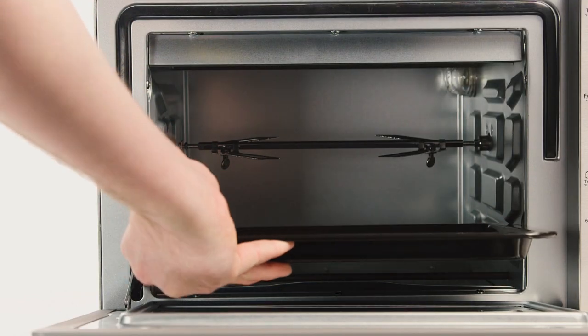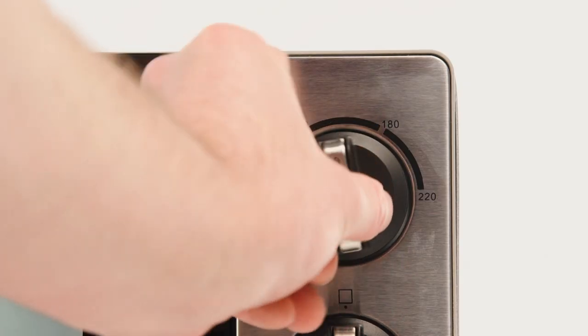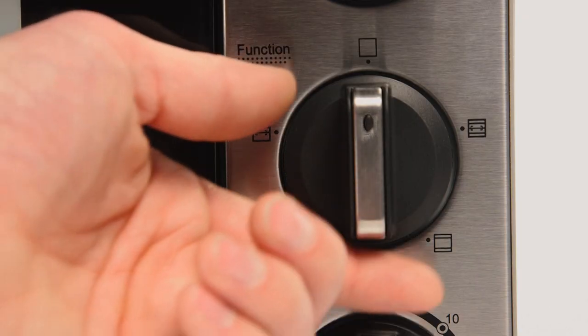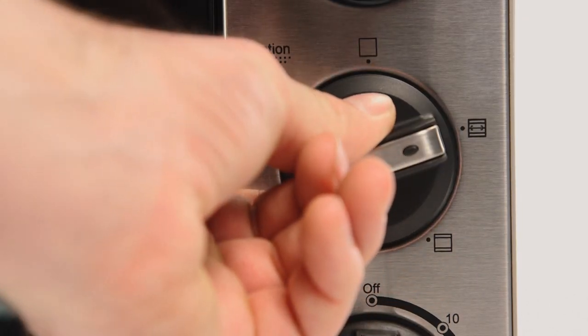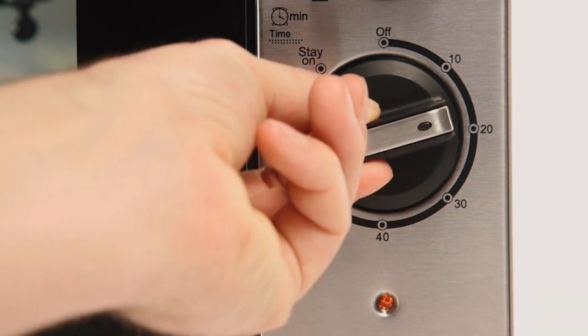Re-fit the baking tray on the lowest slot. Next, turn the temperature dial to 220 degrees. Then, turn the function dial to the desired rotisserie option. Turn the timer control dial to the required time.